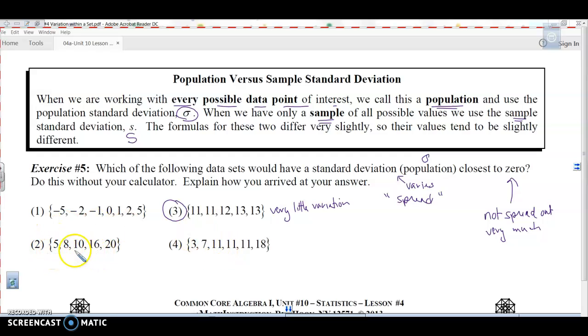It would probably be number 2 because the numbers are the most spread out. These are farthest apart. It goes from 5 to 20. This one goes from negative 5 to 5. This one goes from 3 to 18. So this one has very little variation in the numbers, so it would have the smallest standard deviation.